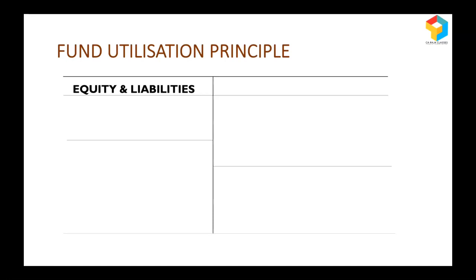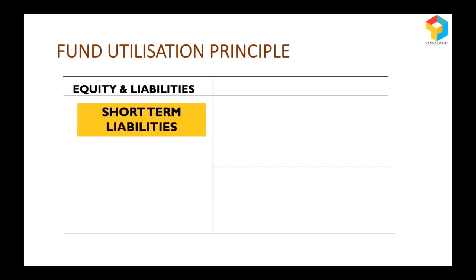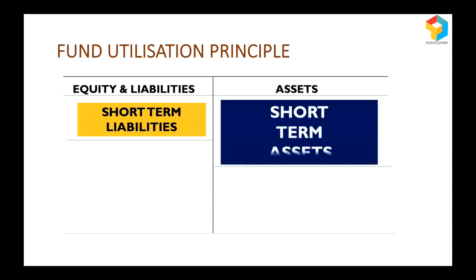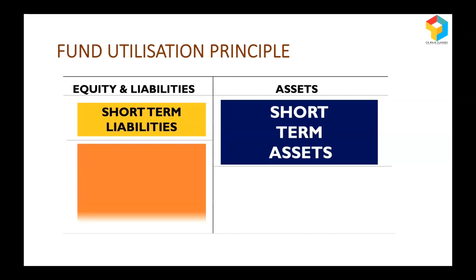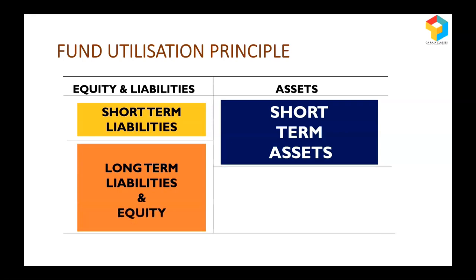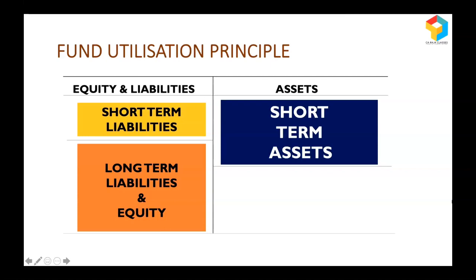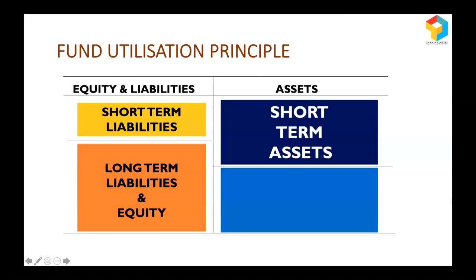Funds can come from owners and outsiders. When funds come from outsiders with a commitment to repay within one year, we call them short-term liabilities, and using those short-term liabilities, short-term assets can be created. But when short-term assets are greater than short-term liabilities, it automatically gives rise to the understanding that a portion of short-term assets is funded by long-term funds, and the remaining long-term funds are being utilized for creating long-term assets.